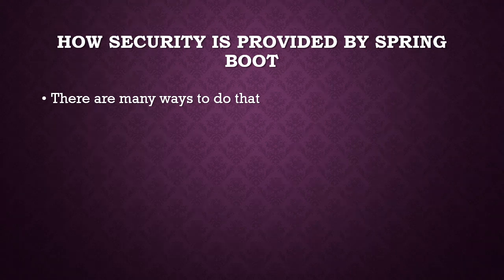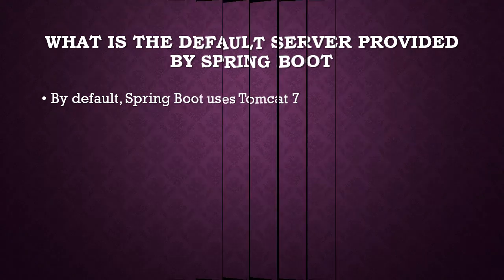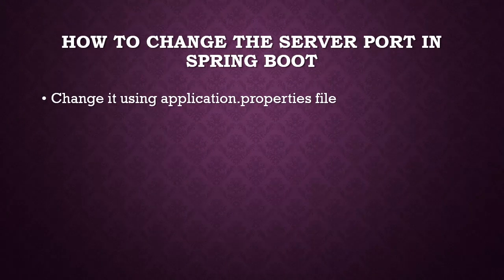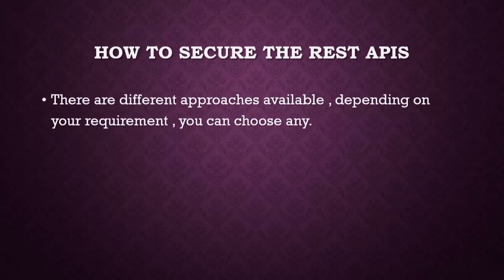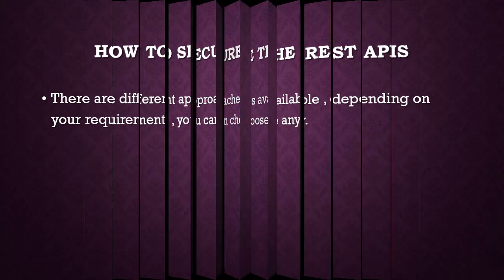How is security provided by Spring Boot? There are many ways — it differs from project to project. What is the default server provided by Spring Boot? By default it uses Tomcat 7, though the version can differ. How to change the server port in Spring Boot: using application.properties you can set server.port equal to whatever port you want, or by passing the argument -Dserver.port. How to secure REST APIs? Different approaches are available — OAuth, JWT, and others — depending on your project requirement.